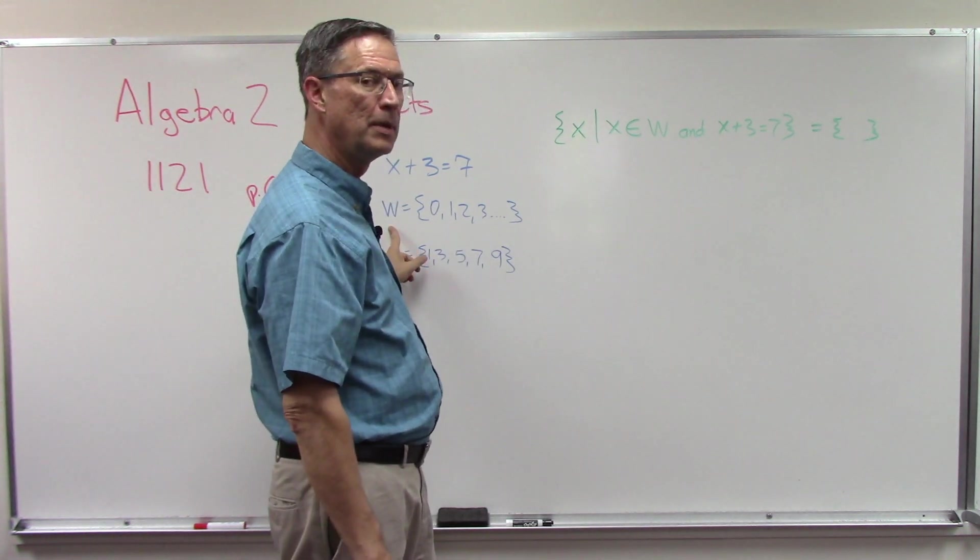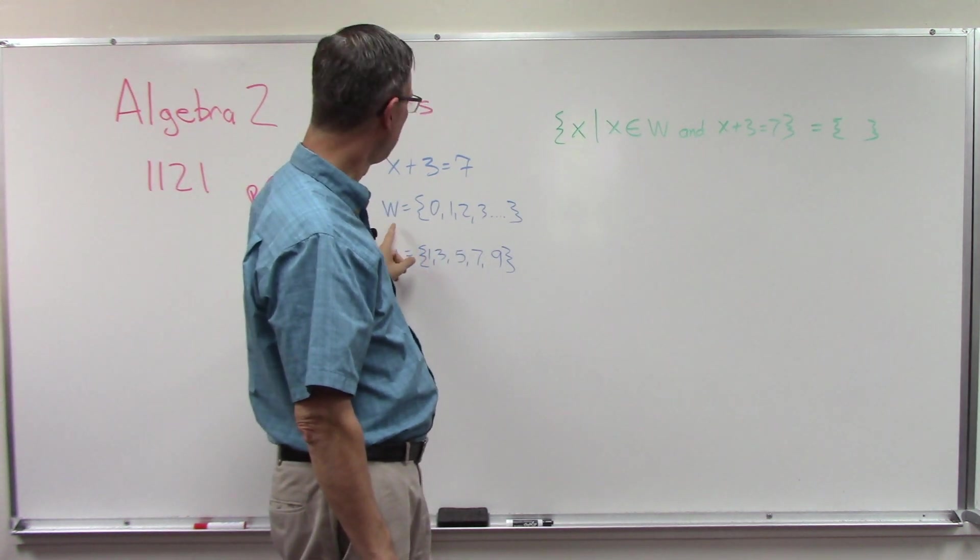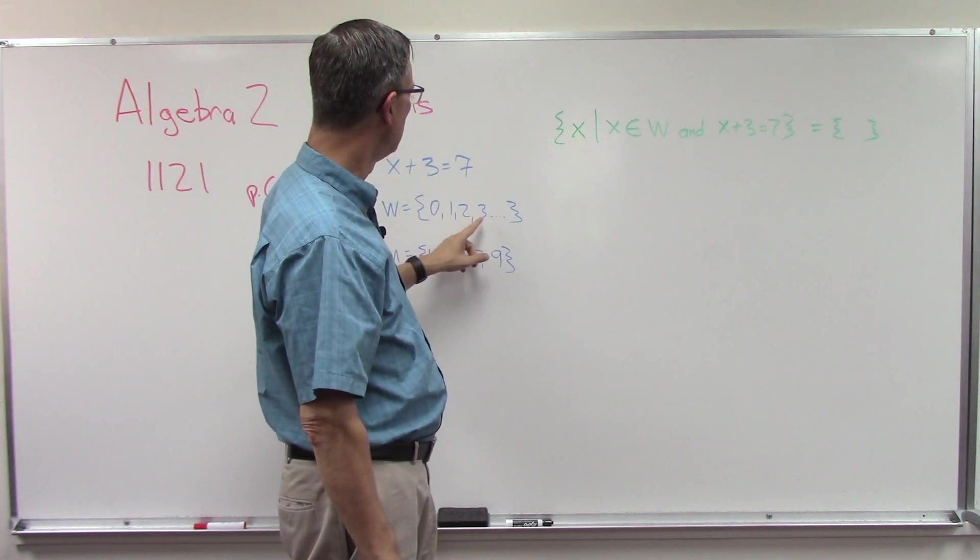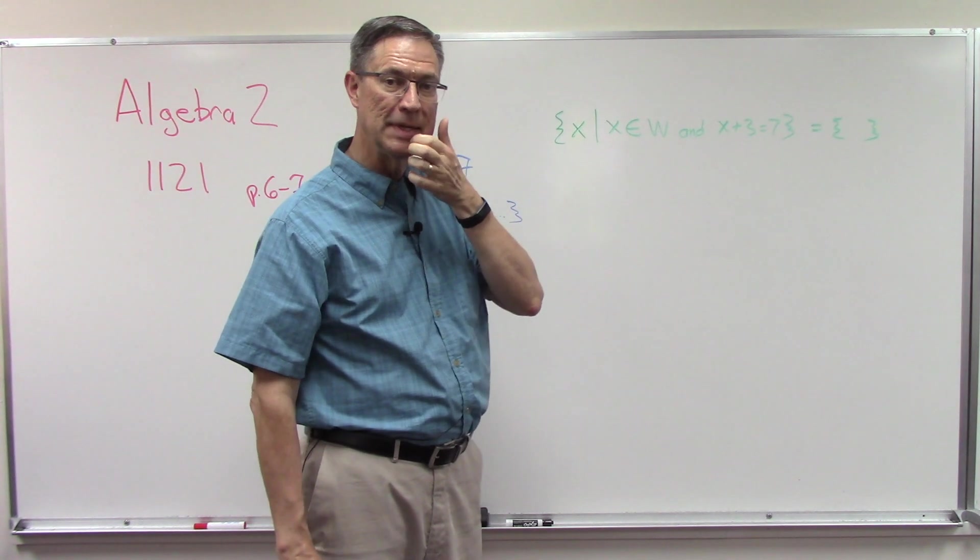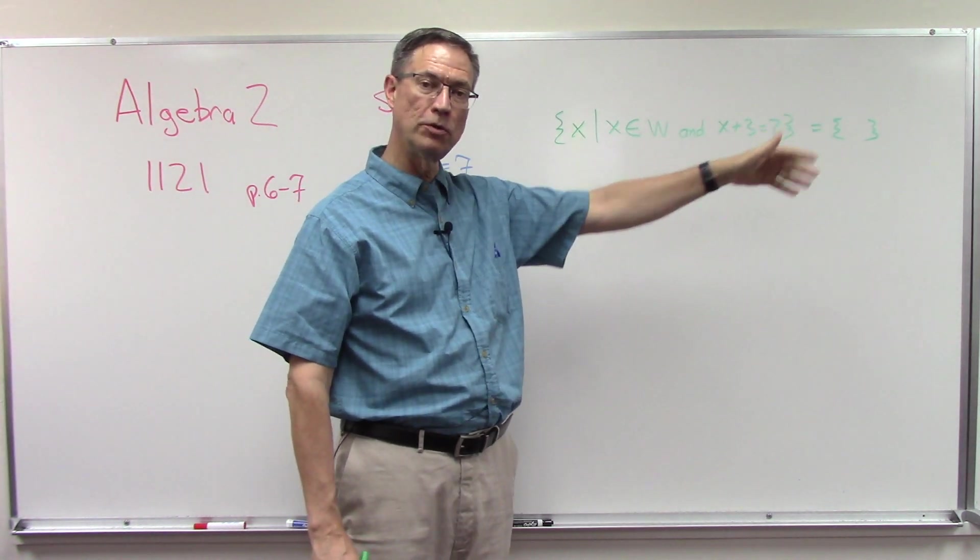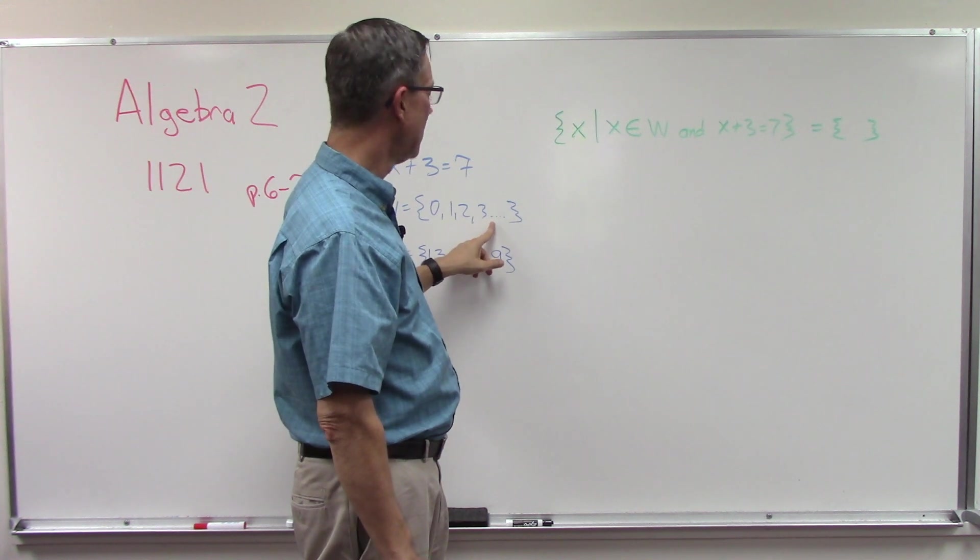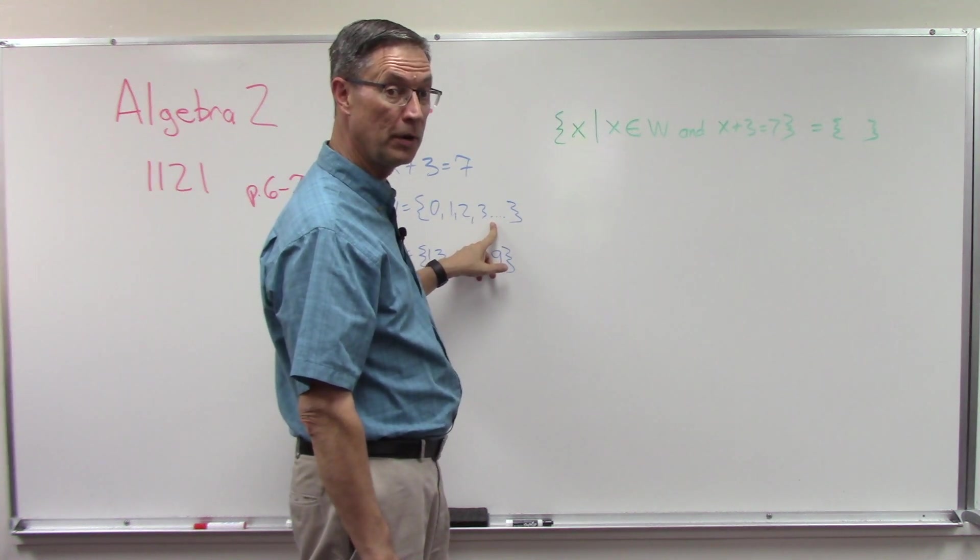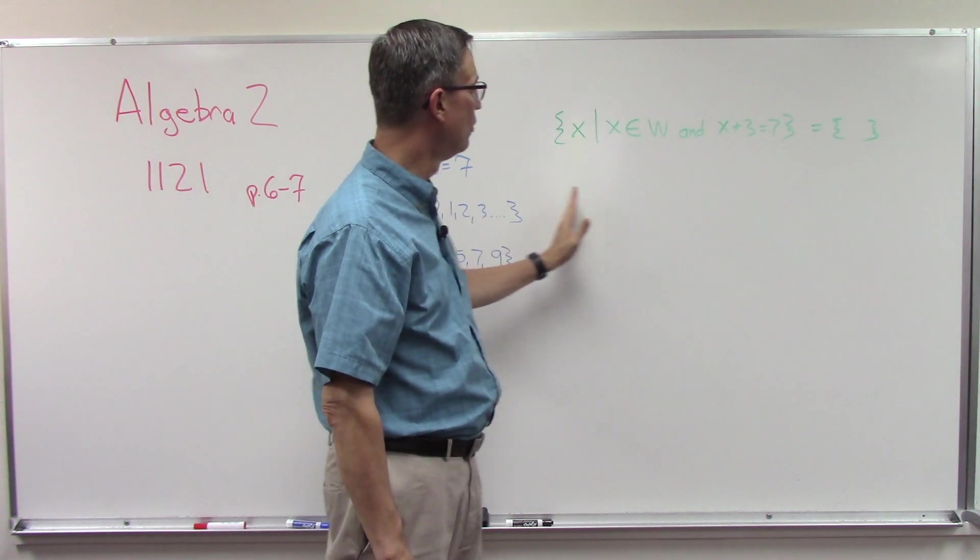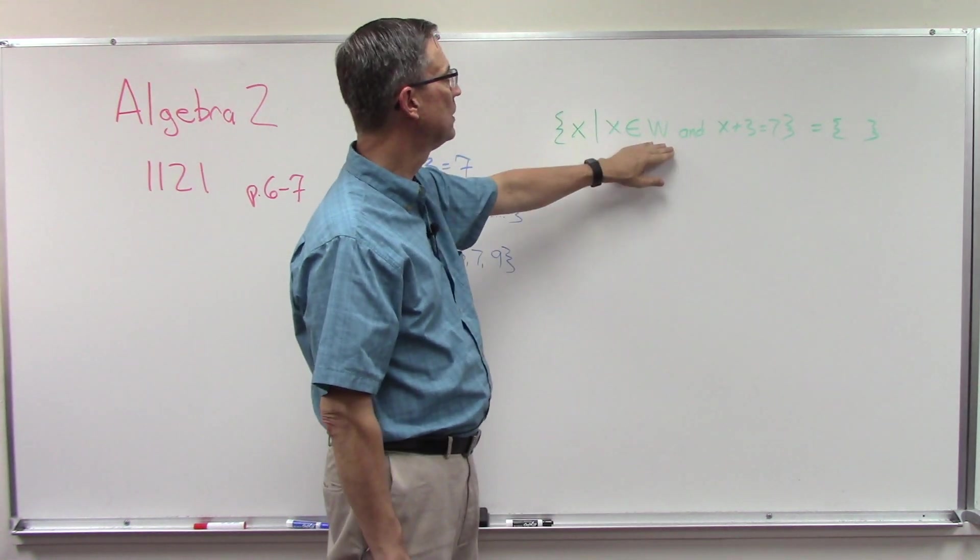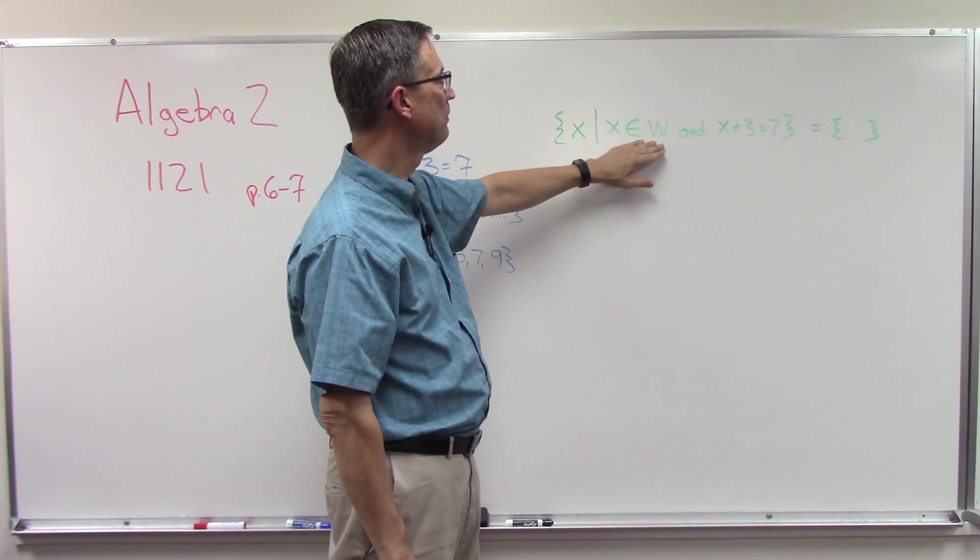Four plus three equals seven. But the question is, is four part of, or an element of, set W? So we're going to find set W. Here it is. And it's zero, one, two, three, and then the dot dot dot means that it goes infinitely in the positive direction. So even though the number four does not appear here, I don't see it, this pattern tells me that yes, four is part of that set.